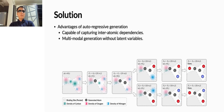There are two key advantages of autoregressive generation. First, it is capable of capturing relationships between generated atoms. Second, it is by definition capable of multi-modal sampling, without the need of introducing additional latent variables.